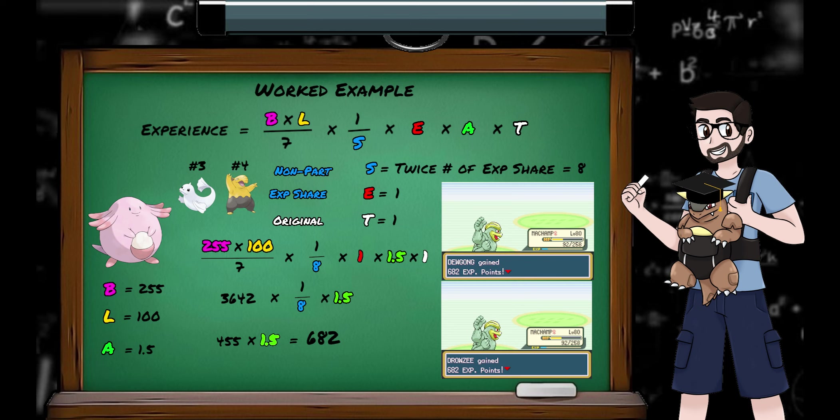Dewgong and Drowzee are identical as far as the calculations are concerned. They both didn't participate, they're holding XP shares, and they aren't traded. So that's base times level over 7 again, divided by 8, as S is twice the number of non-fainted XP shareholders, and a single times 1.5 as it's a trainer battle, giving Dewgong and Drowzee 682 experience each.